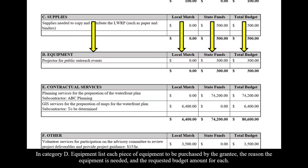In Category D, Equipment, list each piece of equipment to be purchased by the grantee, the reason the equipment is needed, and the requested budget amount for each.